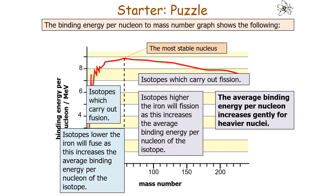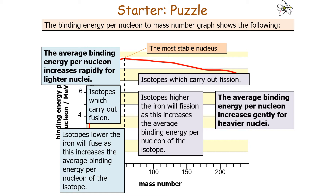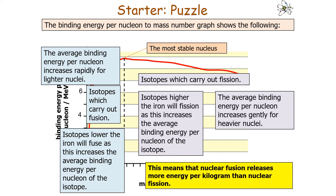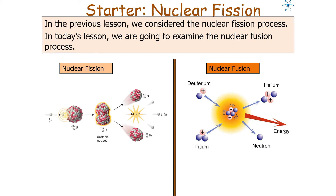It's important to note that for fission, the average binding energy per nucleon increases gently for heavier nuclei. But the average binding energy per nucleon below iron increases rapidly. This means that fusion increases the binding energy per nucleon at a higher rate than fission does. So nuclear fusion increases nuclear stability more easily than nuclear fission, and it releases more energy per kilogram than nuclear fission in a single event.